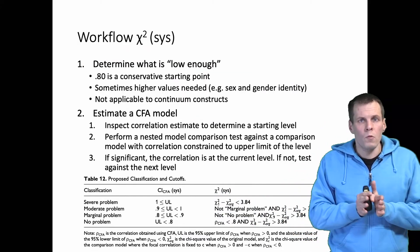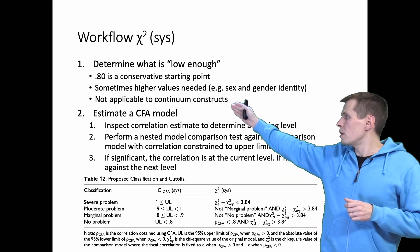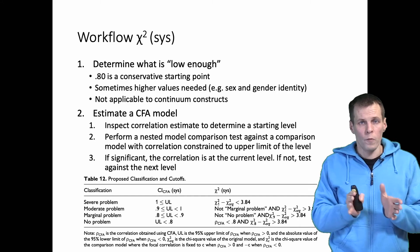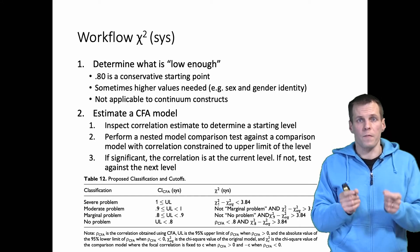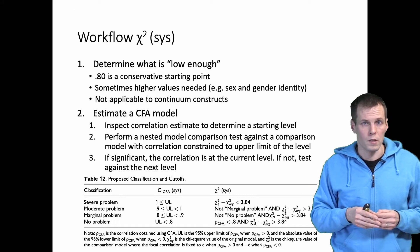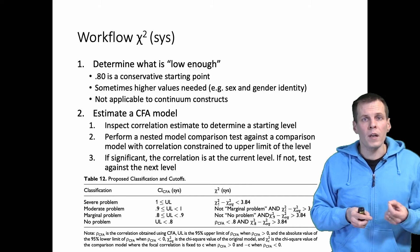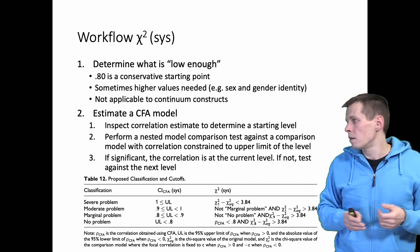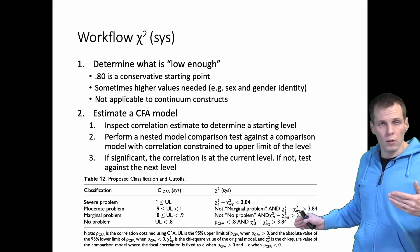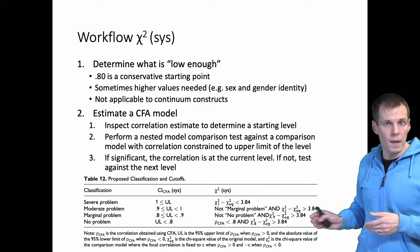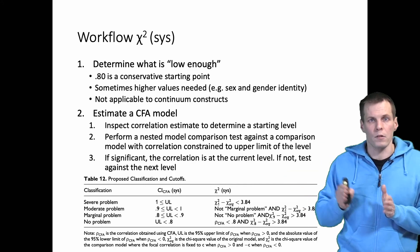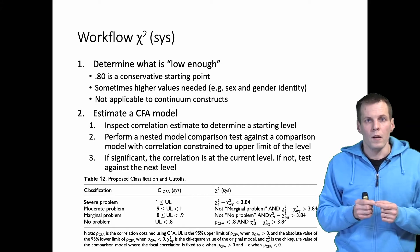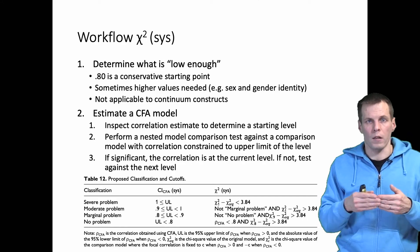The workflow for the Chi-square test is a bit more complicated. It starts the same way: determine what is low enough to establish thresholds, then estimate the same confirmatory factor analysis to get the correlations, fixing the factor variances to one instead of fixing the first loadings. Then we determine an initial level for each correlation based on the correlation estimate. For example, if a correlation estimate is 0.8 and we use this classification, we would position that correlation at the marginal problem level. Then we test that correlation against the next level by constraining the focal correlation to 0.9 and re-estimating the model.